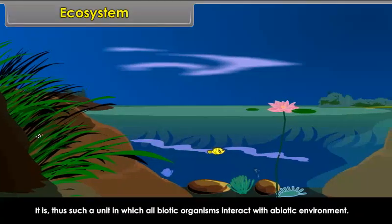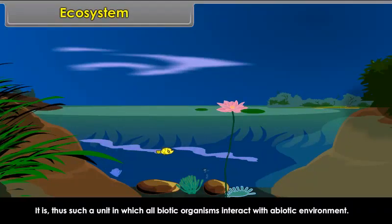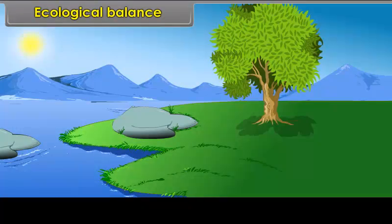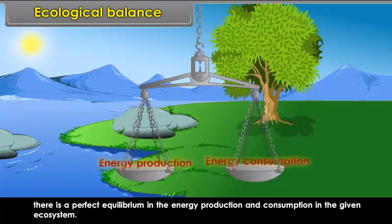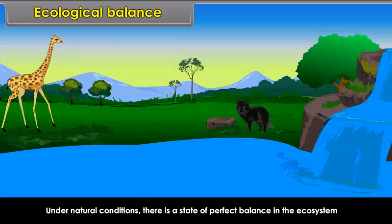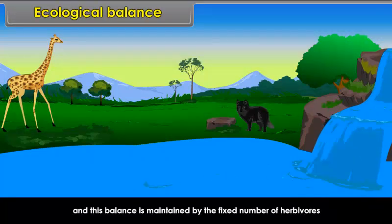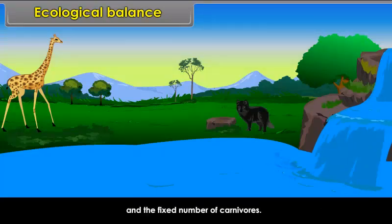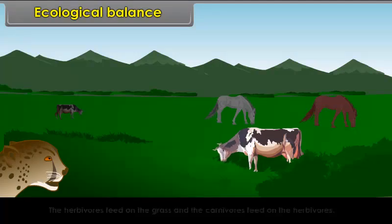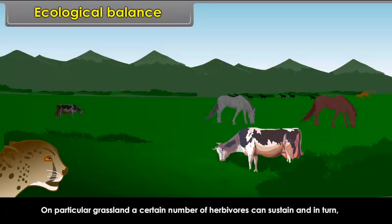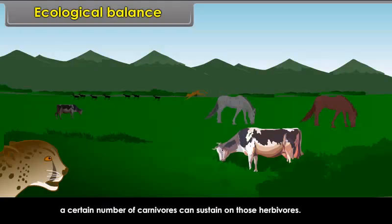Ecological balance is the condition under which there is a perfect equilibrium in the energy production and consumption in the given ecosystem. Under natural conditions, there is a state of perfect balance in the ecosystem, and this balance is maintained by the fixed number of herbivores and the fixed number of carnivores. The herbivores feed on the grass, and the carnivores feed on the herbivores. On a particular grassland, a certain number of herbivores can sustain, and in turn, a certain number of carnivores can sustain on those herbivores. Thus, in the state of ecological balance, the living organisms remain almost stable.